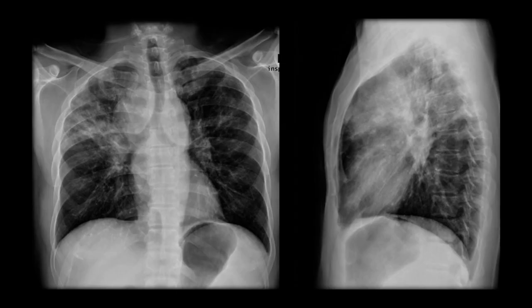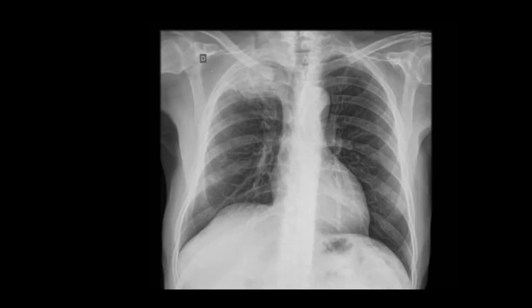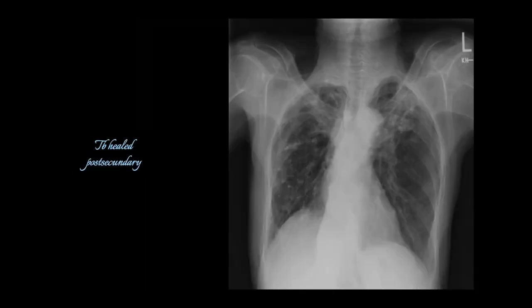Apart from TB, various other lung diseases can involve the lung apices, including certain types of lung infections, lung tumors, and inflammatory conditions. Detecting abnormalities in the apical regions is crucial for accurate diagnosis and timely initiation of appropriate treatment.